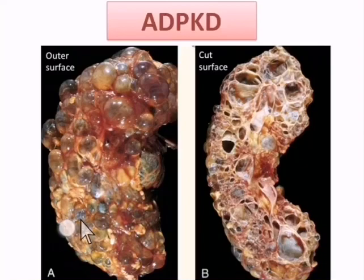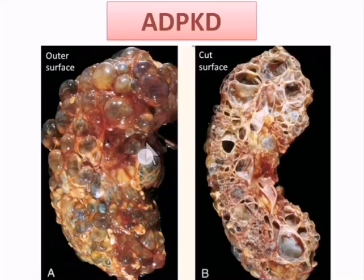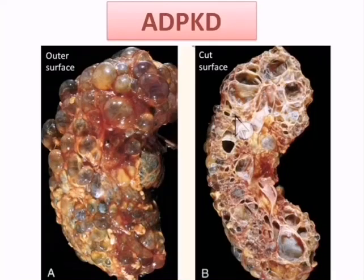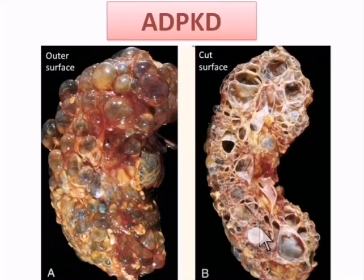This slide shows the kidneys of a patient with adult polycystic kidney disease. Grossly, the kidneys are large in size — it is possible for the kidney to reach three kilograms. The outer surface is irregular, and almost all normal kidney tissue is replaced by variable-size fluid-filled cysts. The patient ends up with chronic renal failure early in adulthood.